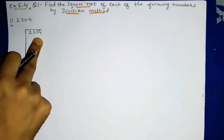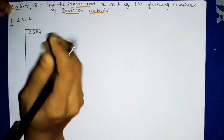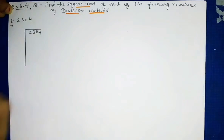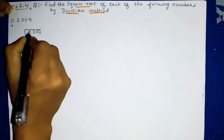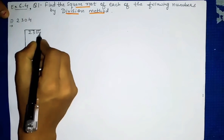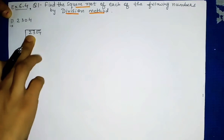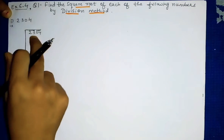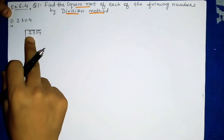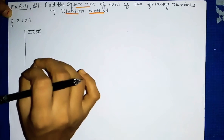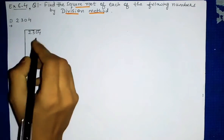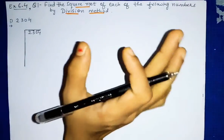We always start from the last digit. We will draw bars — this is called a bar. We have seen this method in the introduction video. We draw a bar here and then here, making two-two pairings. So '23' is the first pair and '04' is the second pair. Now we start our division. The first two digits are 23. We need to take a perfect square number that is less than or equal to 23.